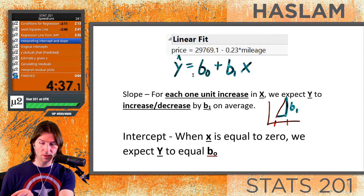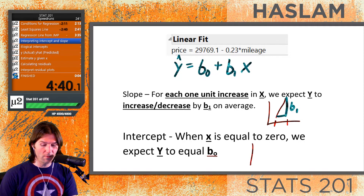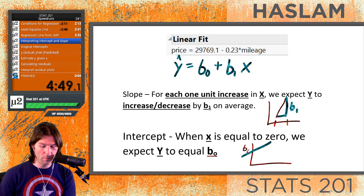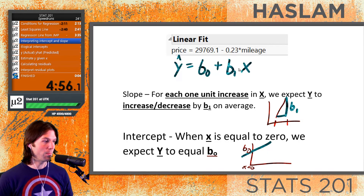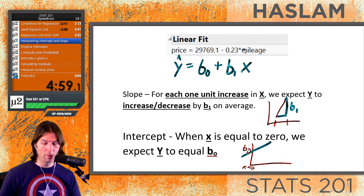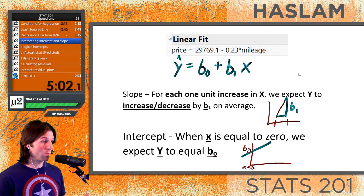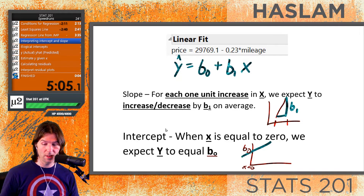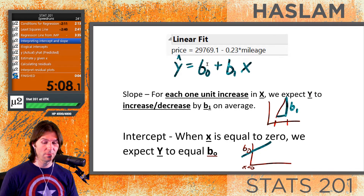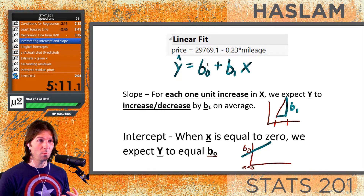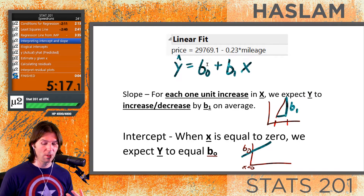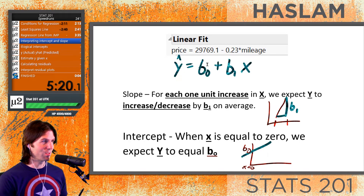The intercept is the value of Y we expect when X equals zero. So when we interpret it in context: when the mileage of a car is equal to zero — meaning it's a brand new car — we would expect the price of the car to equal $29,769.10.